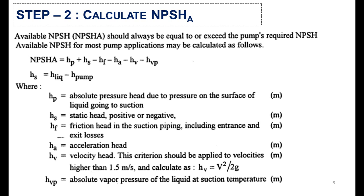In the second step, you will calculate the net positive suction head available. Here is the formula: Hp is the absolute pressure head due to pressure on the surface of the liquid going to suction; Hs is the static head, positive or negative; Hf is the friction head in the suction piping including entrance and exit losses; Ha is the acceleration head; Hv is the velocity head; and Hvp is the absolute vapor pressure of the liquid.